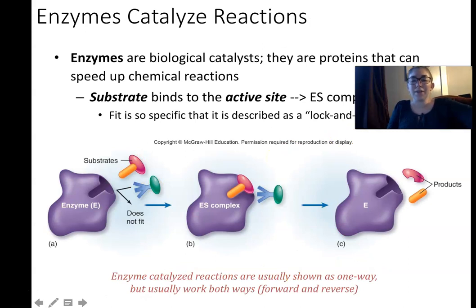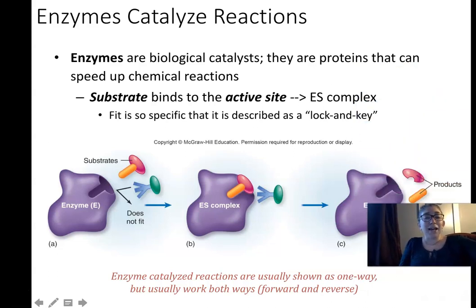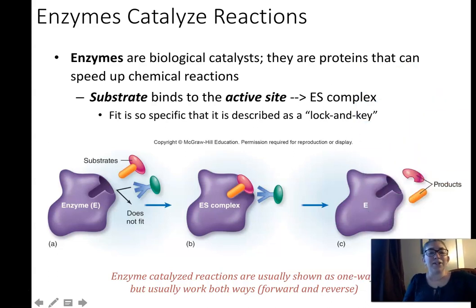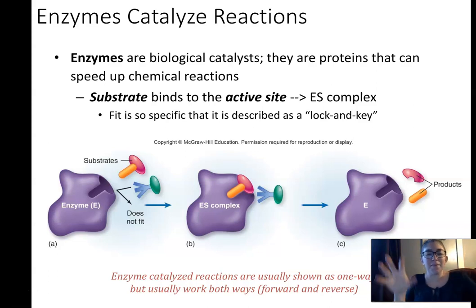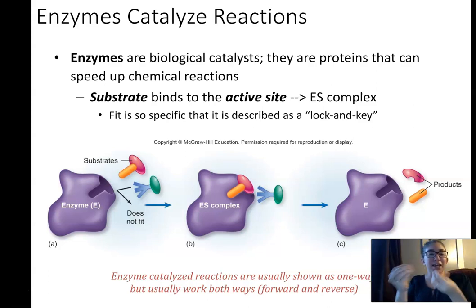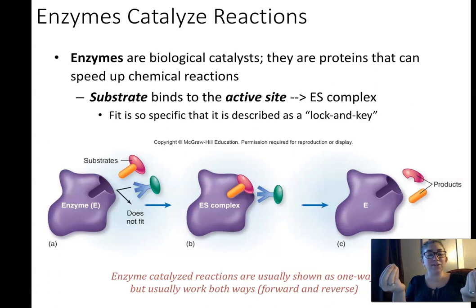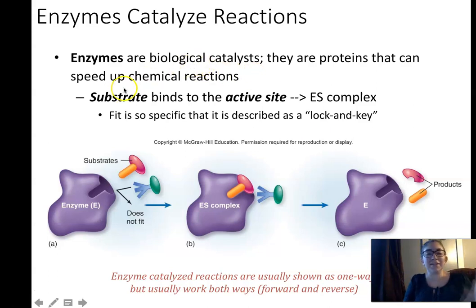All chemical reactions in cells are catalyzed or sped up by proteins called enzymes. Enzymes are biological catalysts — a catalyst is anything that speeds up a chemical reaction. Enzymes speed up reactions by binding to chemical reactants, bringing them together, and facilitating the breaking and reforming of bonds that leads to products. The substances an enzyme binds to are called substrates. In biology, a substrate is the thing that binds to an enzyme.